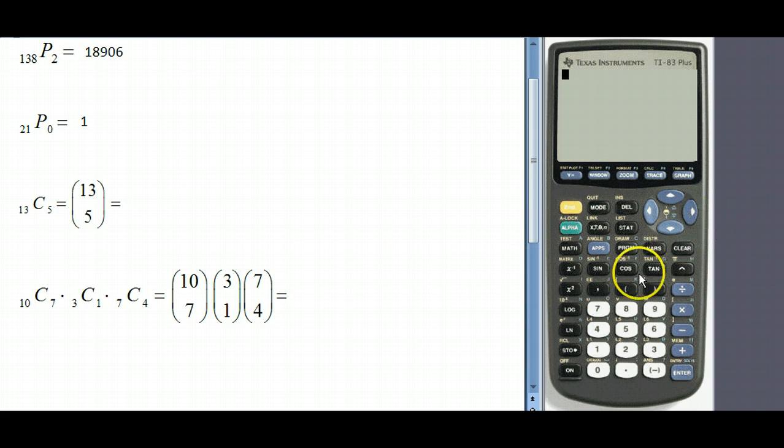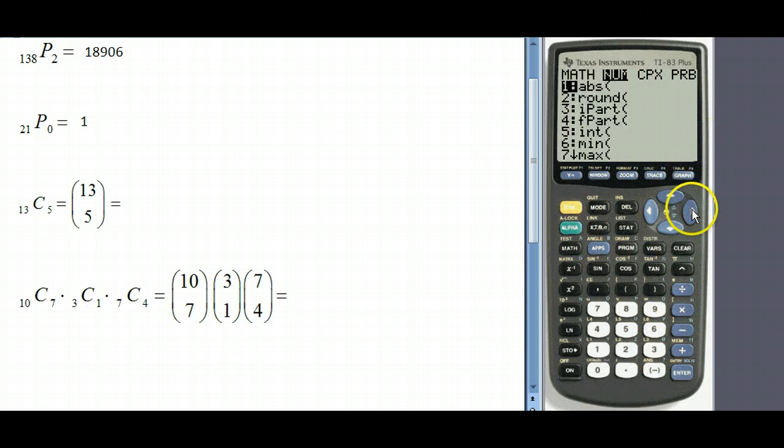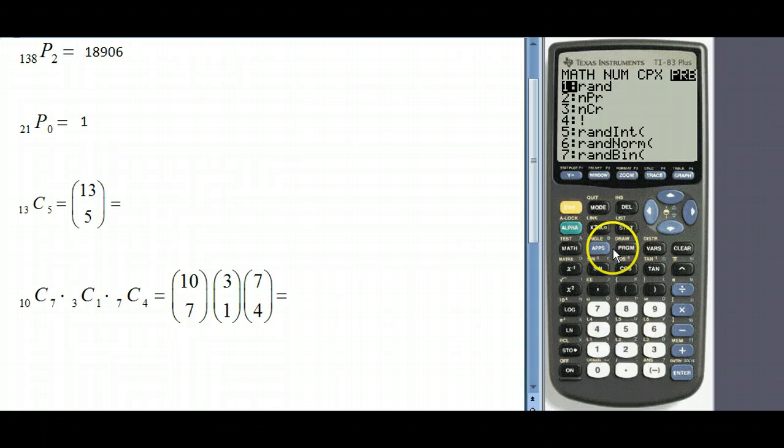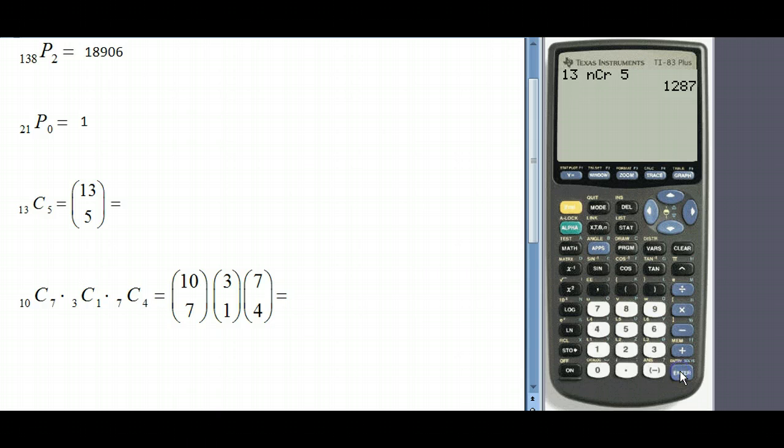Let's go ahead and do this one so we need to first type in 13, then go to math, probability, and then we select option three, and then we go to five. So what this is telling us is that if we have 13 things and we wanted to group them five at a time where order does not matter, we would have 1,287 different groups.